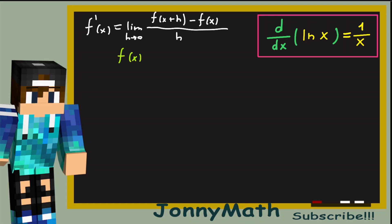Since in our case f of x equals the natural log of x, we can plug ln of x into our limit. And we get the limit as h approaches 0 of the natural log of x plus h minus the natural log of x all divided by h.